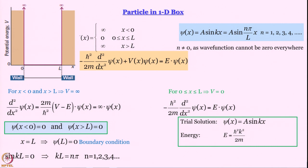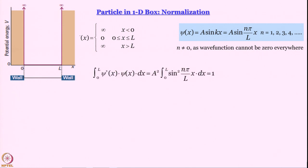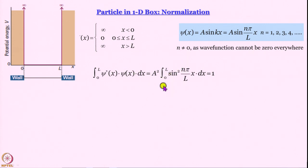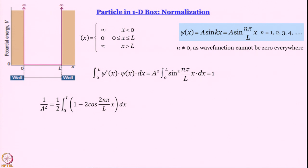The only thing left is to determine A by normalization. We integrate between x = 0 and x = L — not from −∞ to +∞ — because the particle is confined to this region. Setting A²·∫₀ᴸ sin²(nπx/L) dx = 1, we use the trigonometric identity to write sin²(nπx/L) in terms of cos(2nπx/L). The second term integrates to 0 due to the boundary conditions, and the first term gives L/2. Therefore A = √(2/L).